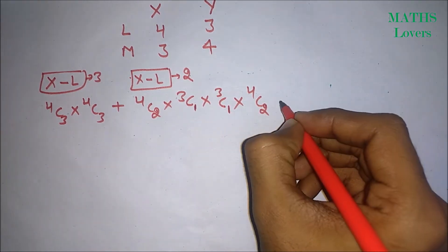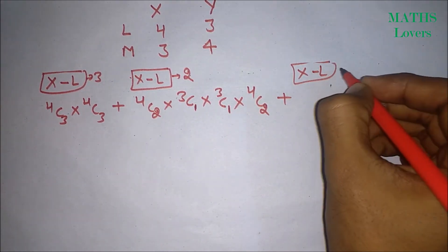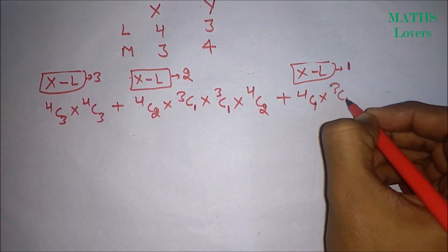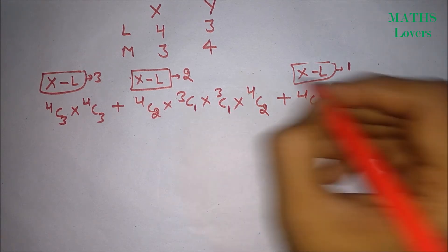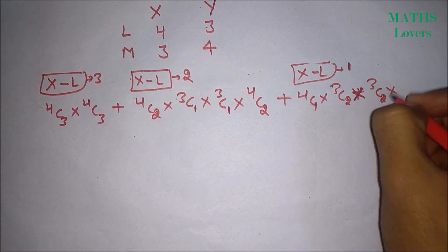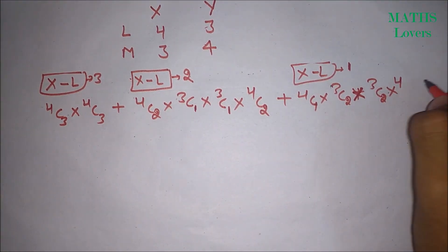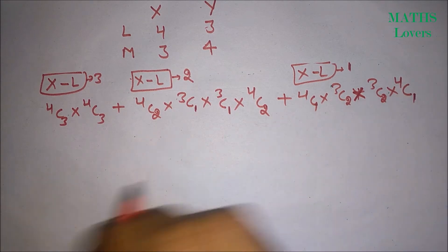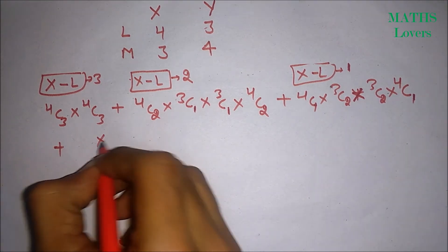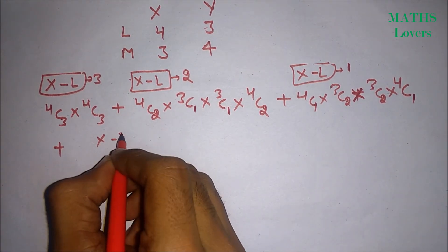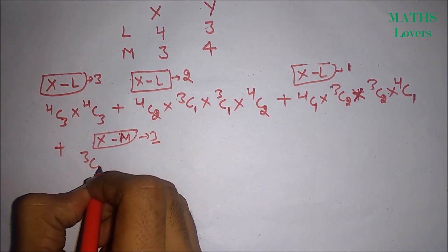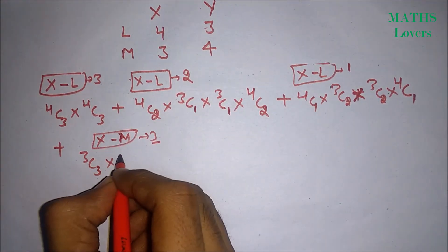Case 3: X is calling one lady, which equals 4C1, and X calls two men, giving 3C2. Then Y will call two ladies, giving 3C2, and one man, giving 4C1. Case 4: X is calling no ladies, only three men, so 3C3, and Y will call three ladies, giving 3C3.